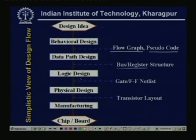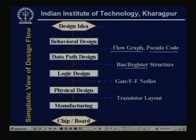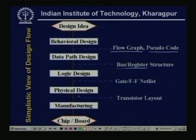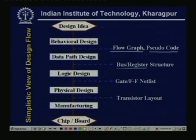After logic design comes physical design. Physical design means once the correct logic has been synthesized, the next step is how we can get this implemented on silicon. There are several steps — later we will see in detail the different steps of physical design. Then it is manufactured and ultimately we get the chip or board. The chip is actually the integrated circuit chip.